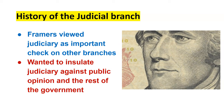The framers also wanted the judiciary to be insulated from public opinion and especially from other parts of government. So they made judges serve for life, so that they wouldn't have to worry about running for office or being reelected, or worry about public opinion at the time. That insulation helps them do their jobs better in terms of looking at the Constitution and interpreting it based on current laws, actions, executive orders, and other agreements or treaties passed by the executive branch as well as by Congress.